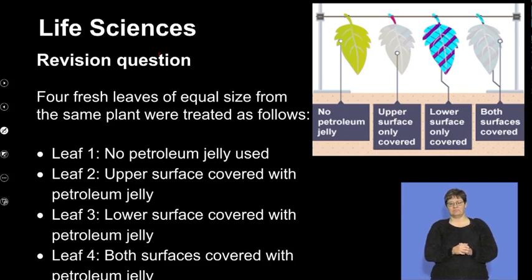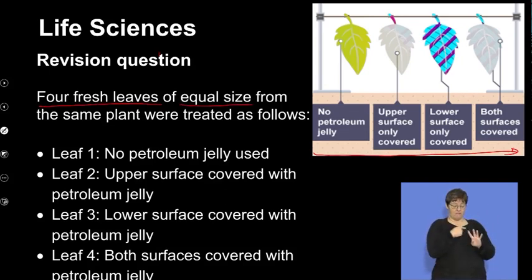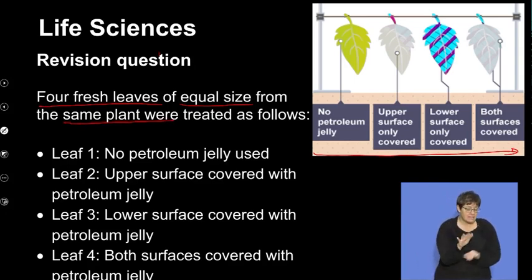What we're doing now is we're looking at an experiment that was done. I'm going to explain it in quite a bit of detail and help you to actually follow through so that you can think out the answers to the questions. Let's have a look at the experiment. Here's a picture of what has been set up. Four fresh leaves of equal size from the same plant were treated in different ways.